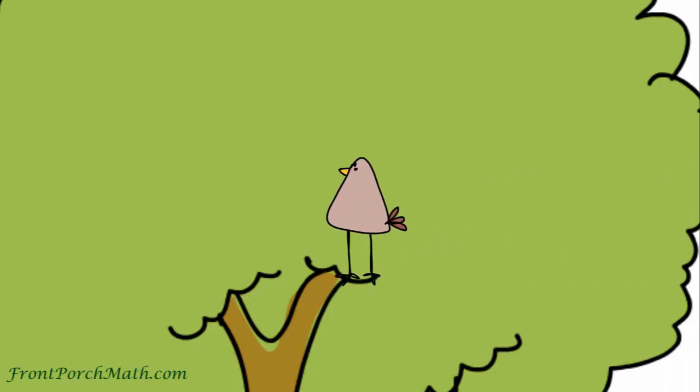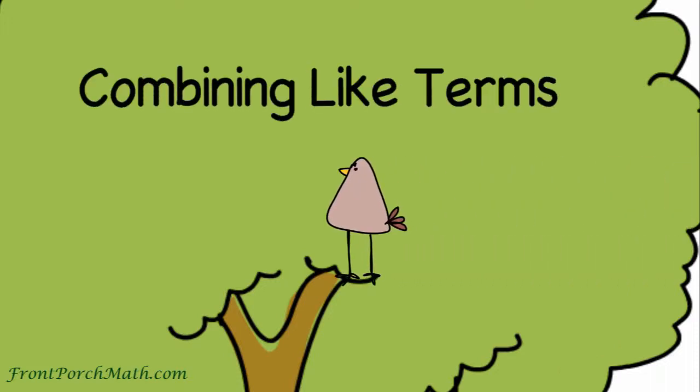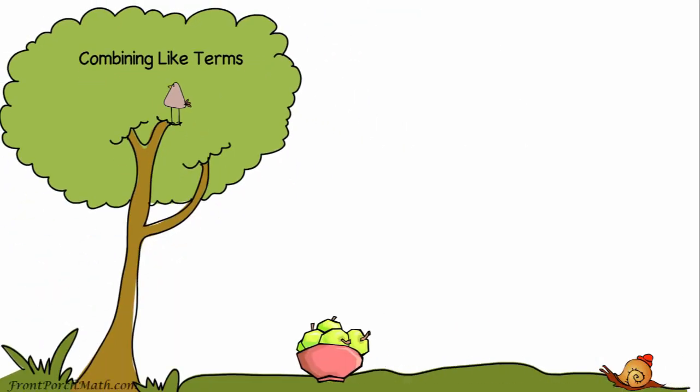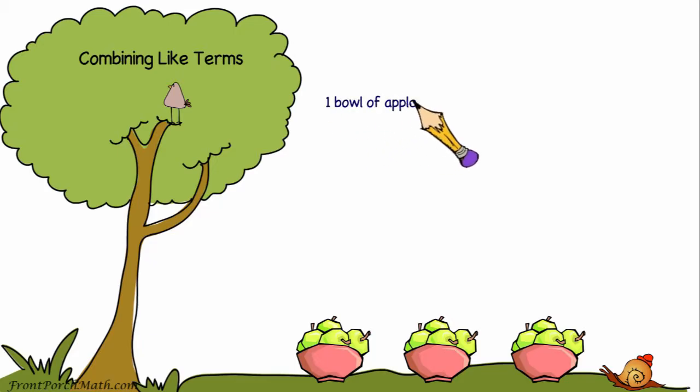In this video, we'll be looking at how to combine like terms. Let's say that we're looking at a bowl containing some unknown number of apples, and then two more bowls of the same sort are added. We could write that situation as one bowl of apples plus two bowls of apples equals three bowls of apples.